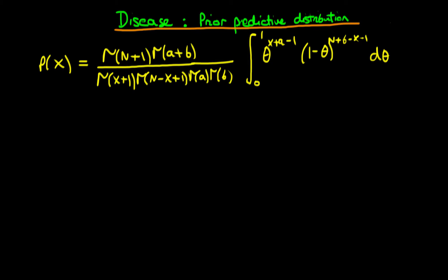In this video, I want to continue our derivation of the prior predictive distribution when we have a binomial likelihood and a beta prior. At the last video, we'd got to this point whereby we had this value for this integral here for the prior predictive distribution. So x here, remember, is in the case of disease, the number of individuals in our sample who actually have the disease. We'd got this form here where we had this relatively complicated first part of our expression involving gamma functions.